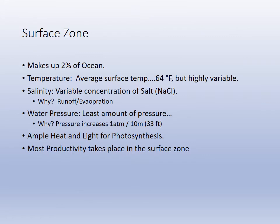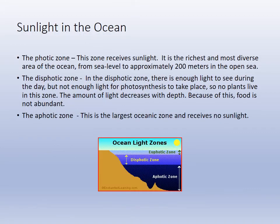The surface zone makes up 2% of the ocean, with highly variable temperature due to seasonality, variable salts because of runoff and evaporation, least pressure, and photosynthesis occurs — so most life occurs in this surface area. When there's enough sunlight for photosynthesis we call it photic. When there's not enough for photosynthesis but there's still light present for eyesight, we call that dysphotic. Aphotic is zero light whatsoever.